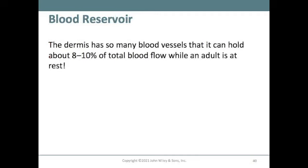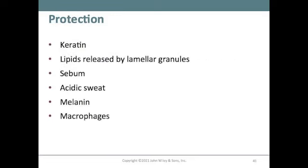The dermis can hold about 8% to 10% of the total blood flow in an adult at rest, serving as a blood reservoir. For protection, keratin, lipids from lamellar granules, sebum from sebaceous glands, and acidic sweat with a low pH help kill microorganisms. Melanin protects against UV light, and macrophages serve as a first line of defense against pathogens that breach the skin.